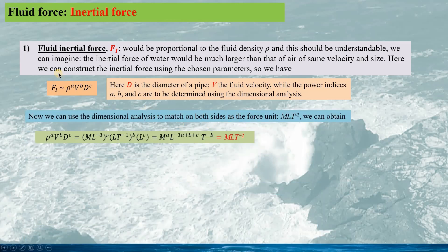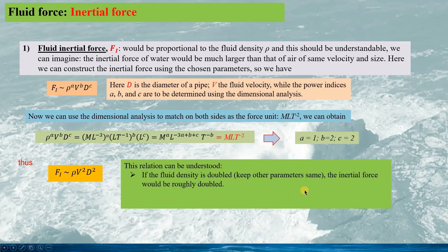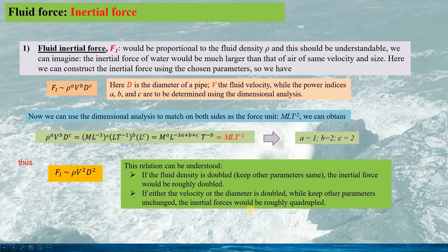Matching both sides of the expression to the force unit — given by mLt^(-2) — we can solve for the power indices: a = 1, b = 2, and c = 2. Thus the approximation expression for the inertia force Fi is: Fi ≈ rho * U² * d². This relation can be understood as follows: if the fluid density is doubled while keeping other parameters unchanged, the inertia force would be roughly doubled. If either the velocity or the diameter is doubled while keeping other parameters unchanged, the inertia force would be roughly quadrupled.